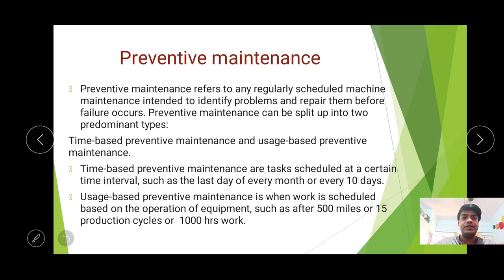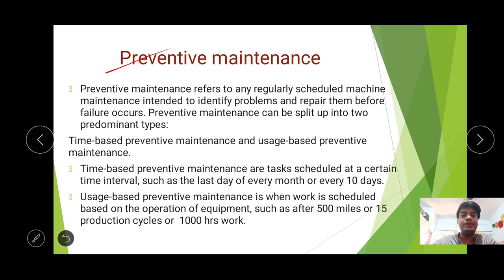Preventive maintenance refers to regular scheduled machine maintenance intended to identify problems and repair them before failure occurs. Preventive maintenance can be split into two predominant types. To avoid breakdown or reactive maintenance, and to avoid costly production discontinuation, we must focus more on preventive maintenance. If preventive maintenance is done carefully and efficiently, reactive maintenance occurrences will be very few, and production and productivity will increase automatically.